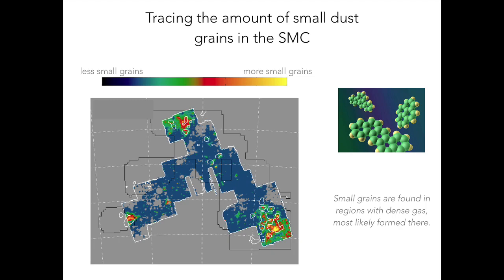Part of what we're going to try to understand with the James Webb Space Telescope is why — why are the small dust grains so different in this galaxy?